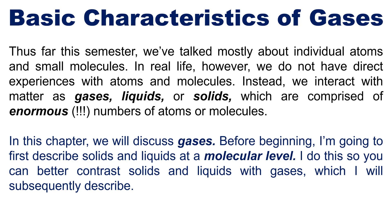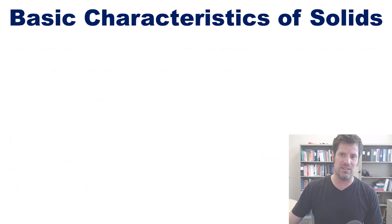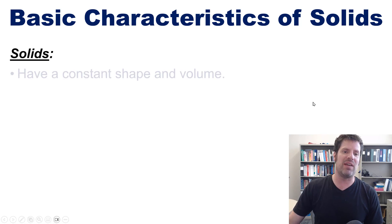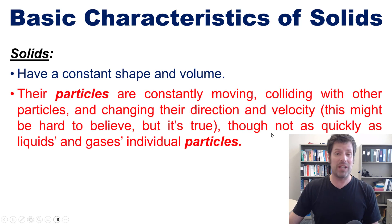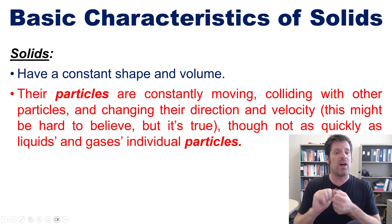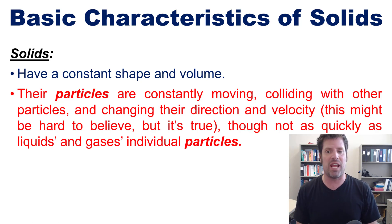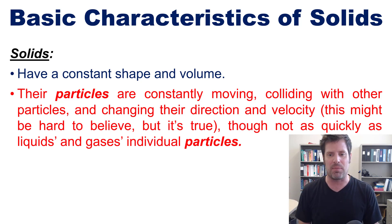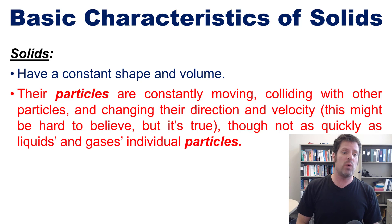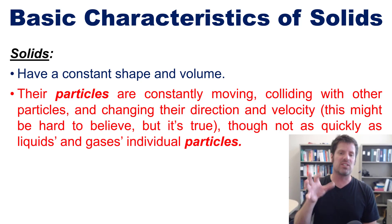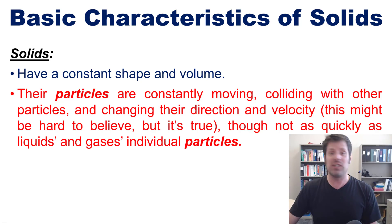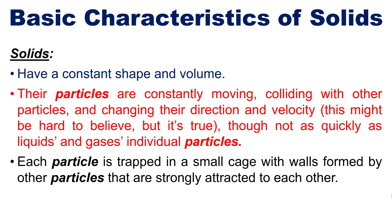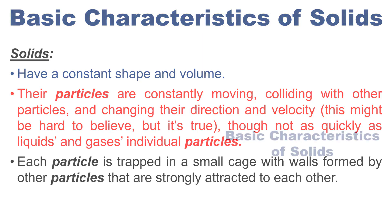We begin with solids. Generally speaking, solids have a constant volume and shape, and their particles are constantly moving, colliding with other particles and changing their direction and velocity — which might seem hard to believe when you look at a solid just sitting there, but it's true. At a molecular or atomic level, they do not move as quickly as liquids and gases. Additionally, in solids each particle is trapped in a small cage formed by other solid particles that are strongly attracted to each other.